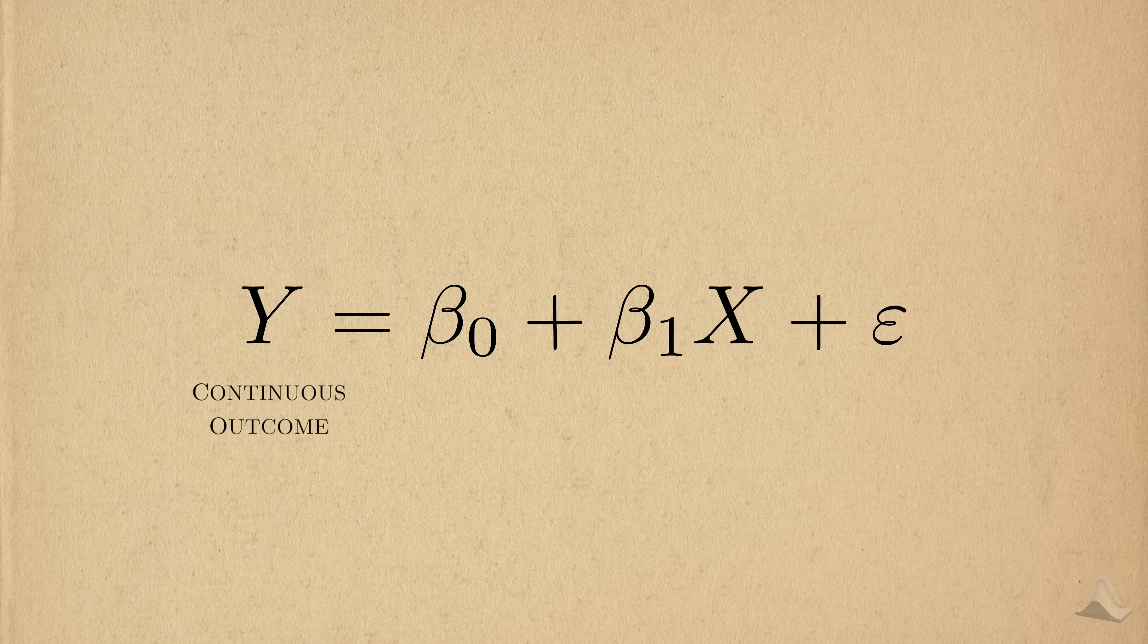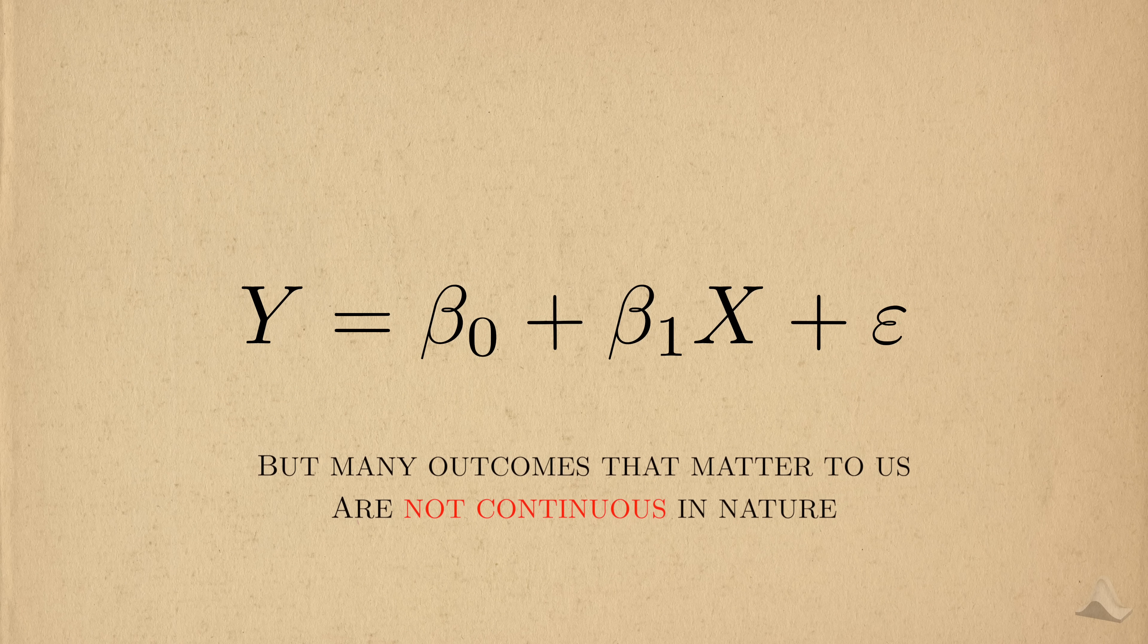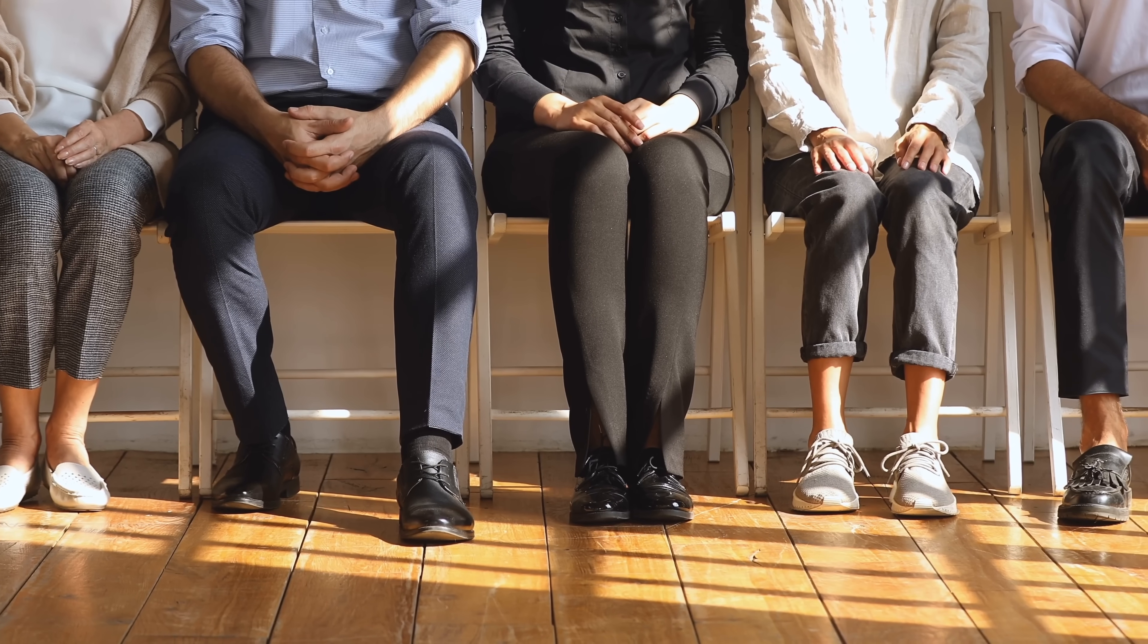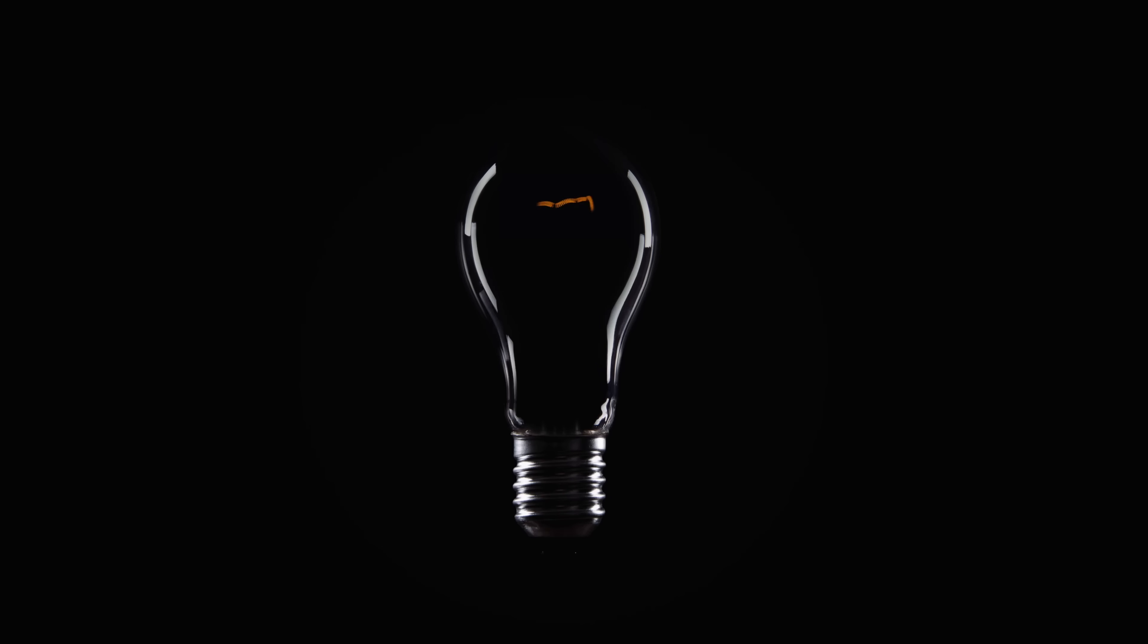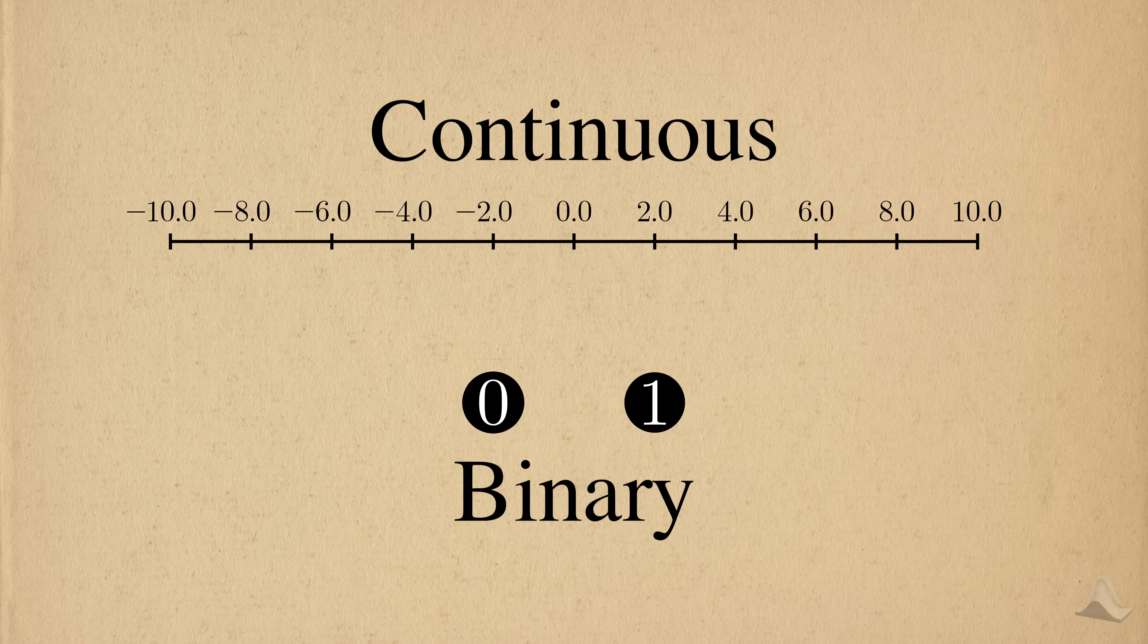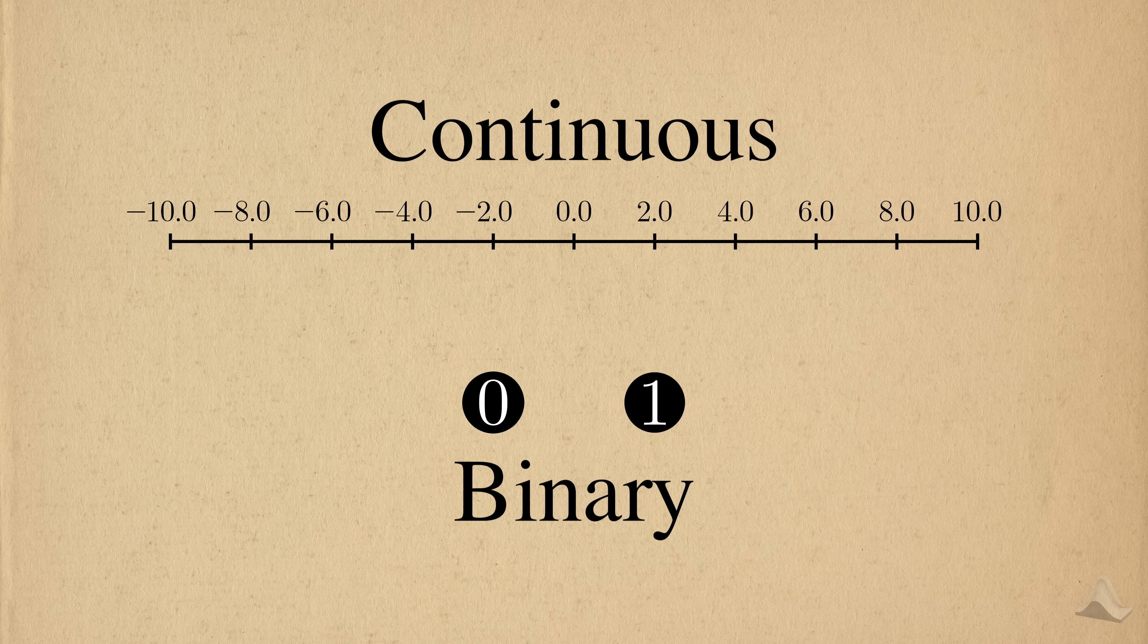With linear regression, the outcome was continuous. But many outcomes that matter to us are not continuous, but rather binary. Will this chemotherapy treat my cancer? Will I get a job after I graduate? These things do or don't happen. It's very different from a continuous outcome, so hopefully it makes sense that we have to model it differently as well.